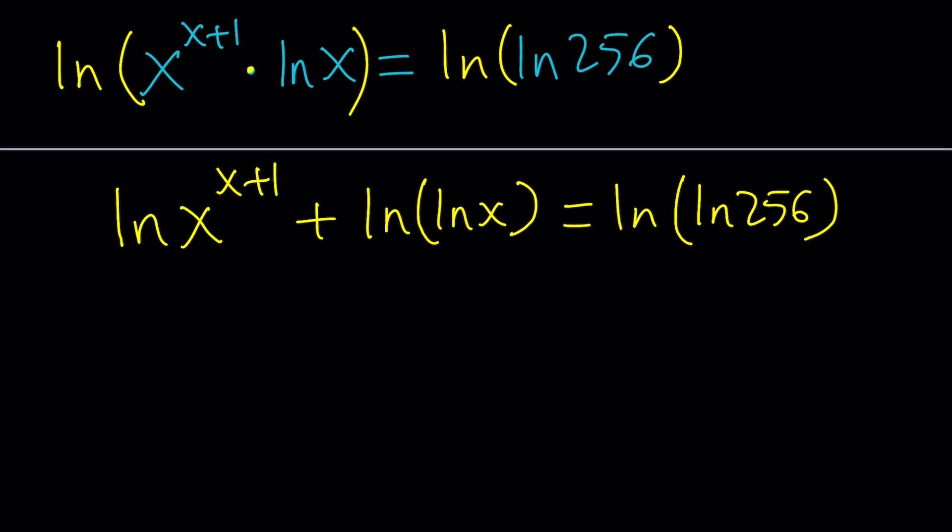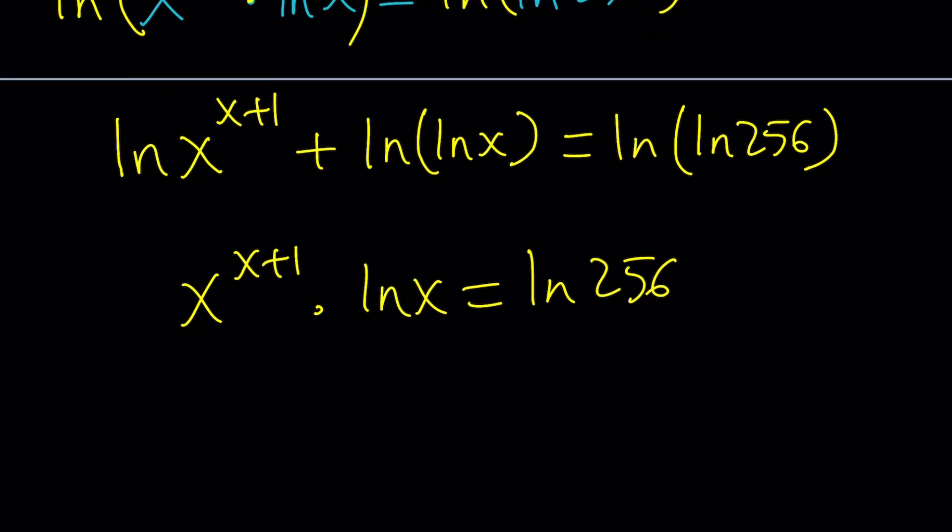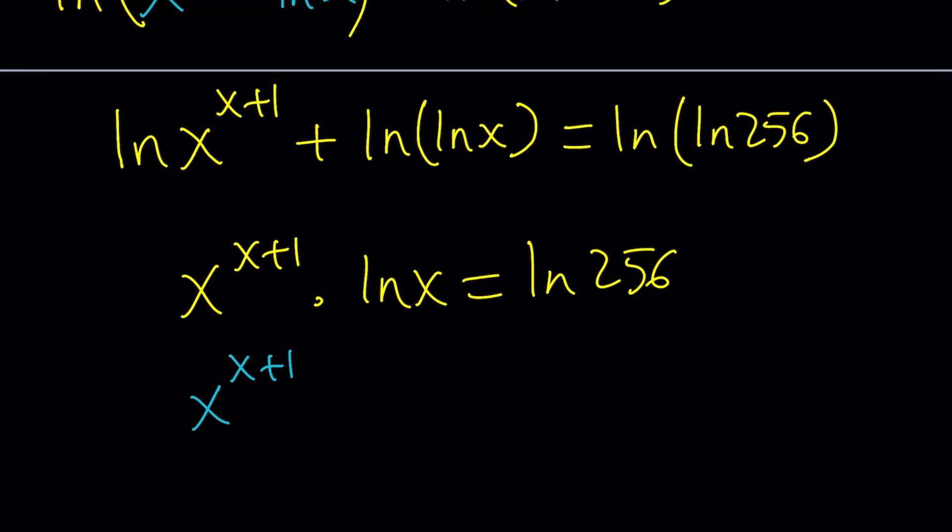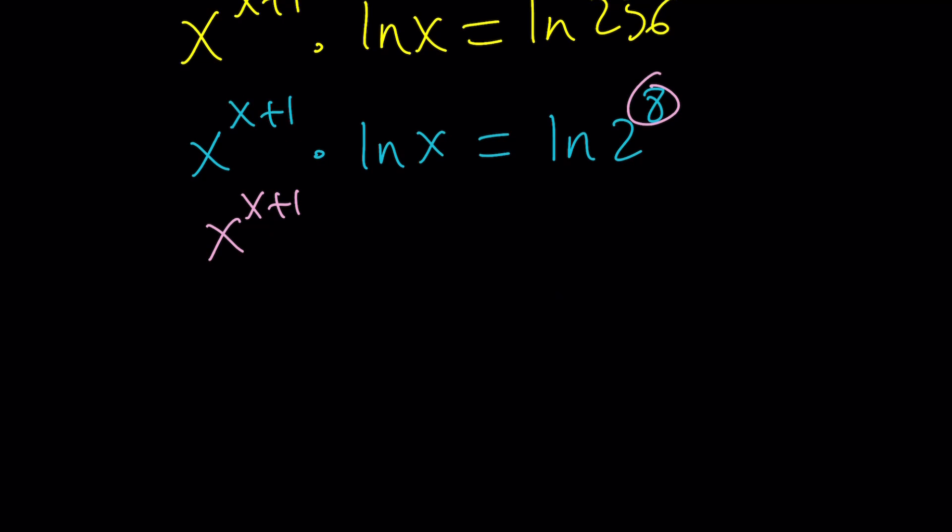Instead of doing this, let's just bring this to the front, and then work on the right-hand side. 256 can be written as 2 to the 8th power. So, I'm going to go ahead and write this as ln 2 to the 8th, and then bring this 8 to the front. x to the x plus 1 times ln x equals 8 times ln 2.